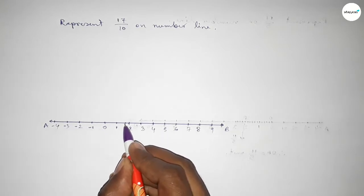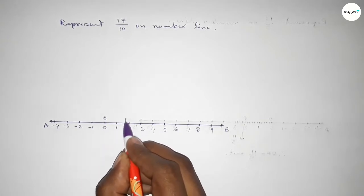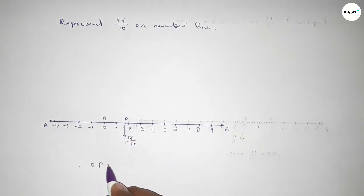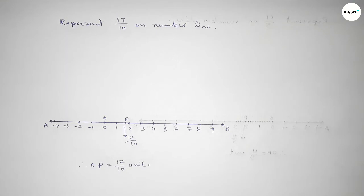This is 1.7, or 17/10, on the number line. Taking points O and P, therefore OP = 17/10 unit. That's all. Thanks for watching. If this video is helpful, please share it with your friends.